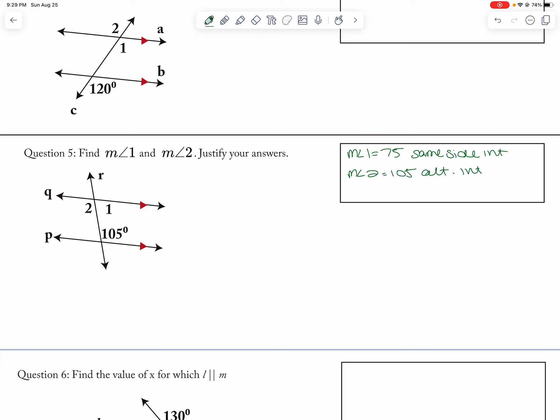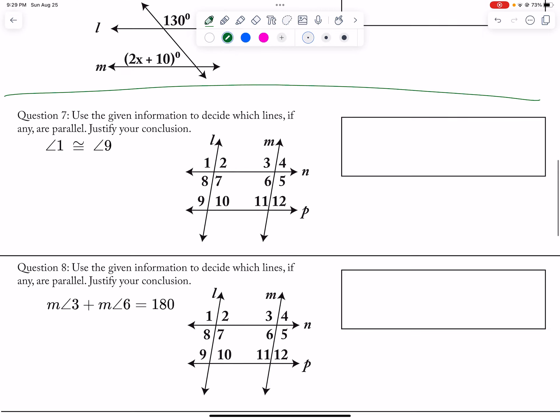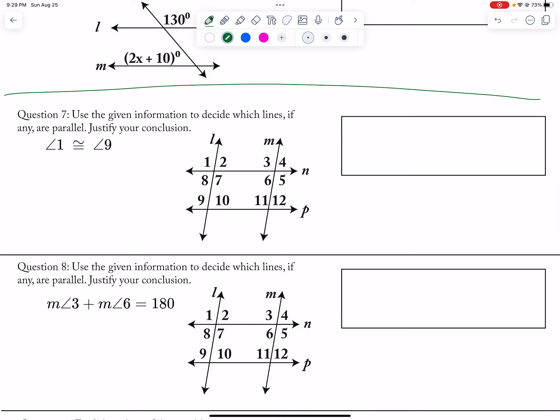Okay, and then 7, I don't know why there's not a line there. That's weird. There should be a line there. Let's see, 7 and 9? No, 1 and 9, just kidding. 1 and 9, that would be corresponding angles, so N is parallel to P, corresponding angles.